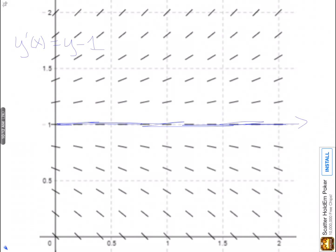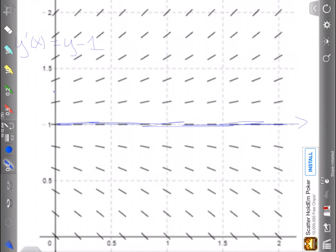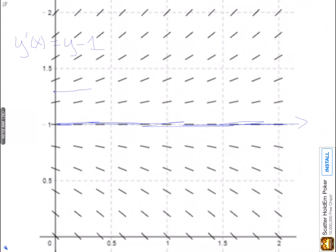If we have an initial condition that y of 0 is anything greater than 1, we can see that our solution is going to have a positive slope. For example, if we have that y of 0 is this point here, the idea is we just kind of follow the slope of the lines up.